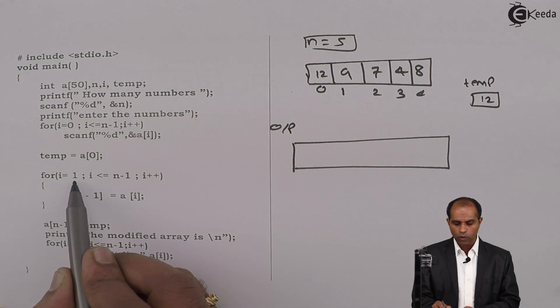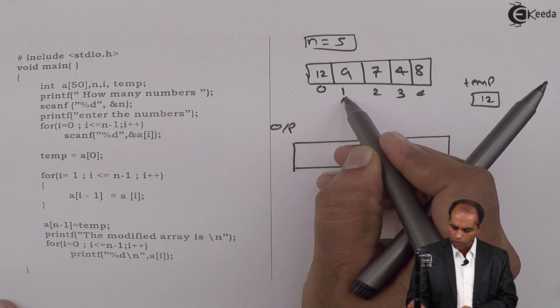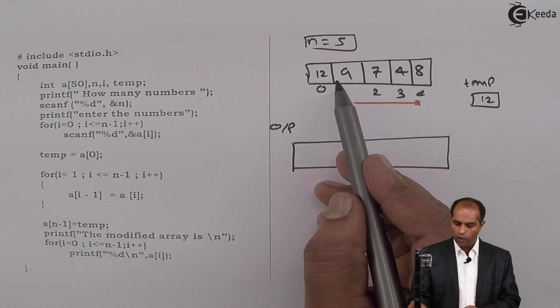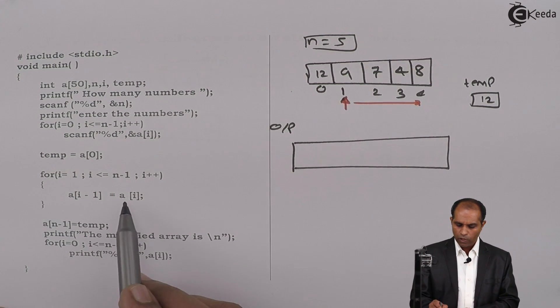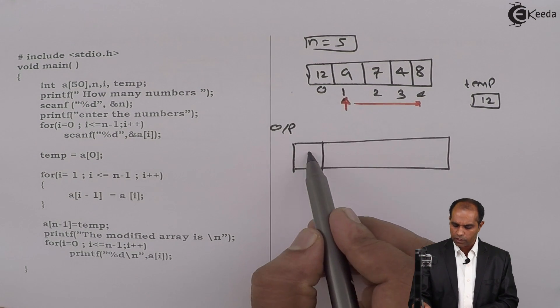So I have to start the loop from what to what? 1 to n minus 1. So 1 to n minus 1 is from this location towards this n minus 1. So a[1] should go to a[1]. When i is 1, a[1] should go to a[0]. So a[1] comes to a[0], that is 9.